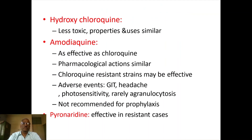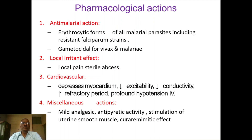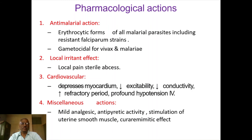Hydroxychloroquine is another drug used for the treatment of malaria; its properties are very similar to chloroquine. Pyronaridine is a very important drug effective in resistant cases. Quinine and quinidine are isomers. Quinine is used for the treatment of malaria, while quinidine is used as an anti-arrhythmic drug. The mechanism is almost similar to that of chloroquine. They exhibit anti-malarial action and produce local irritant effects. With respect to the cardiovascular system, they are myocardial suppressants — reducing excitability, conductivity, and increasing the refractory period — which is why quinidine is used for cardiac arrhythmias.